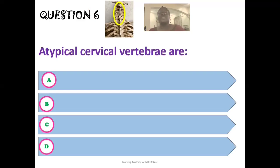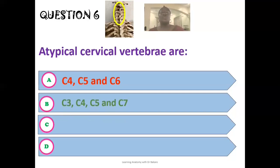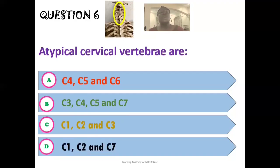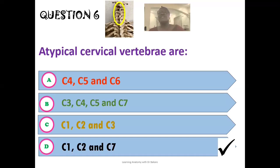The sixth question: which vertebrae are the atypical cervical vertebrae? Options include C4/C5/C6, C3/C4/C5/C7, C2/C3/C4, or C1/C2/C7. The correct answer is the first (atlas), second (axis), and seventh cervical vertebrae. These three are atypical because they are each distinct in their own way, as highlighted in the lecture on cervical vertebrae. Please refer to that lecture if you haven't already.